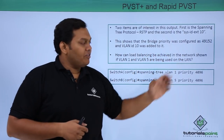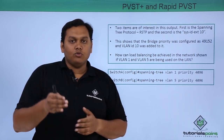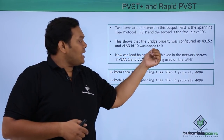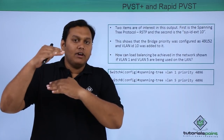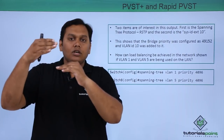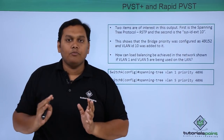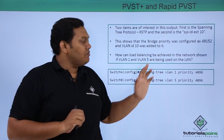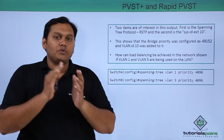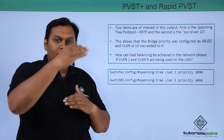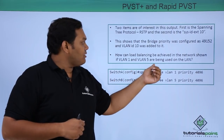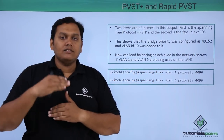The bridge priority was configured as 49152, and VLAN ID 10 is added to it as the SysID Extension. This information tells you which switch is the root bridge and which are the root and designated ports. Using this, you can determine how load balancing is achieved in the network with Switch A, B, C, and D. If VLAN 1 and VLAN 5 are in use, you can determine how to balance the load between them.